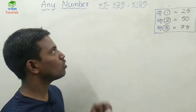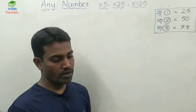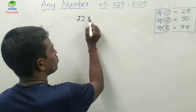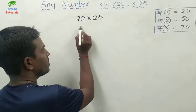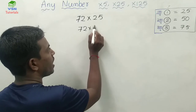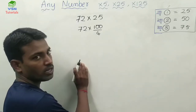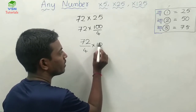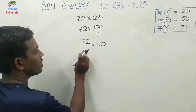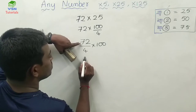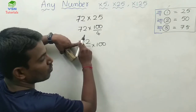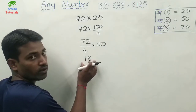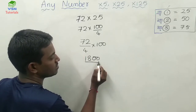Now let's learn how to multiply any number by 25. Let me take the same examples. I want to multiply 72 by 25. This 25 can be written as 100 divided by 4. So you have to divide the given number by 4 and multiply by 100. Divide 72 by 4: 7 by 4 gives 1 remainder 3, then 32 by 4 gives 8 — so 18. 18 into 100 is 1800. Your answer is 1800.